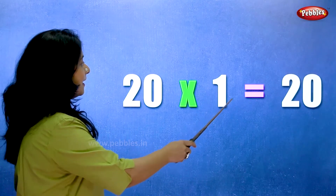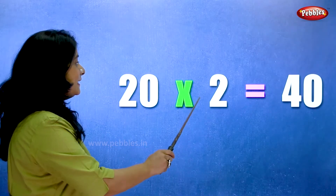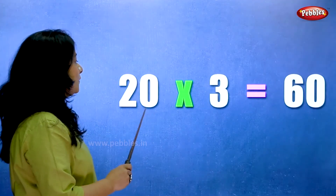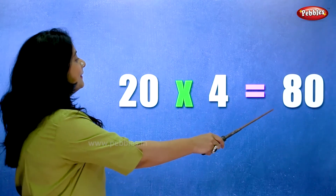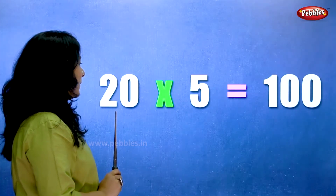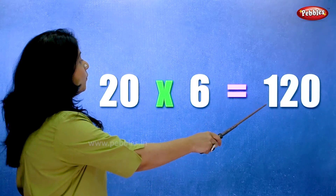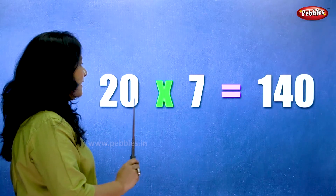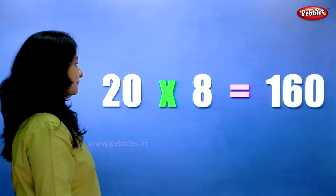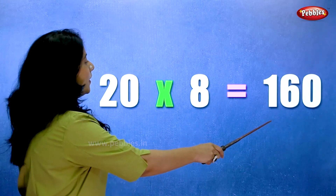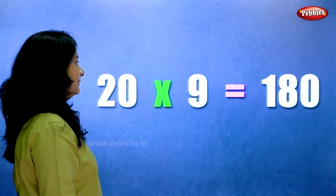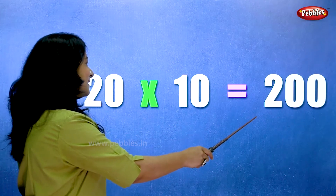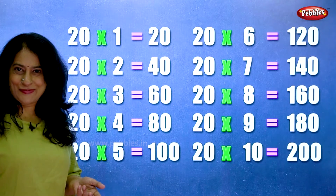20 ones are 20. 20 twos are 40. 20 threes are 60. 20 fours are 80. 20 fives are 100. 20 sixes are 120. 20 sevens are 140. 20 eights are 160. 20 nines are 180. 20 tens are 200. Let's learn the table of 20 one more time.